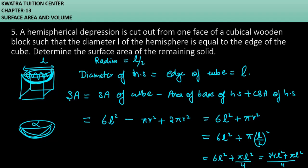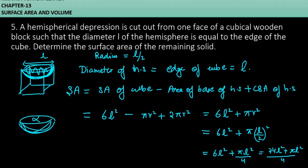And if you want to reduce this, you can do that too. So what do you have to do? L² will be common. And what will you have? (24 + π)/4 times L². And yes, this is the answer for question number 5. Now moving to question number 6.